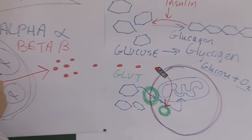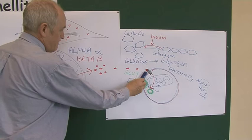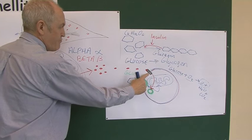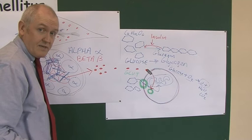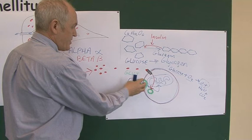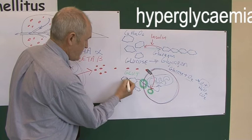So in type 1 diabetes the beta cells are destroyed; because the beta cells are destroyed there's no insulin. Therefore the insulin receptors — which are present and perfectly healthy in type 1 diabetes — have no insulin to stimulate them. Therefore the glucose molecules don't go to the surface, and therefore there's a hyperglycemia.